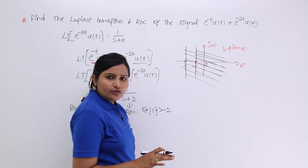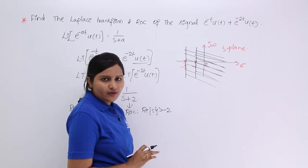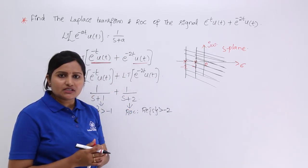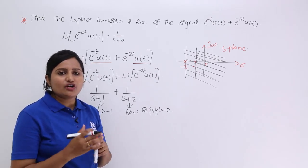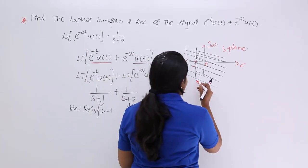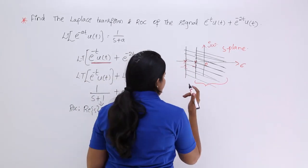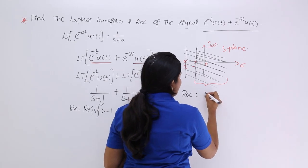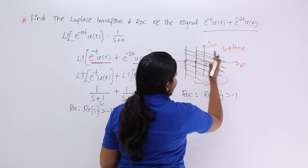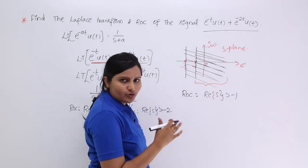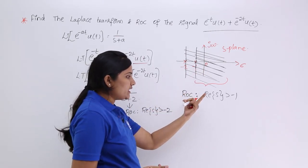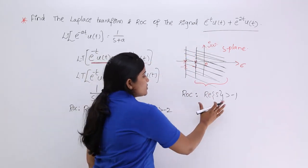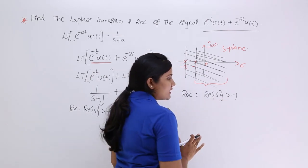As already discussed when covering properties of ROC of the Laplace transform, whenever you have multiple poles with multiple regions of convergence, the resultant ROC is the combination of those regions. Here, the combination region extends from real of s greater than minus 1 to infinity. So the resultant ROC of the combined signal is real of s greater than minus 1.